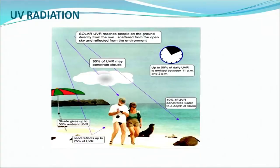Solar UVR reaches people on the ground directly from the sun, scattered from the open sky, and reflected from the environment. 90% of UVR may penetrate clouds. Shade provides up to 50% reduction in ambient UVR. Sand reflects up to 25% of UVR. Up to 50% of daily ultraviolet radiation is emitted between 11 a.m. and 2 p.m. 40% of UV radiation penetrates water to a depth of 50 cm.